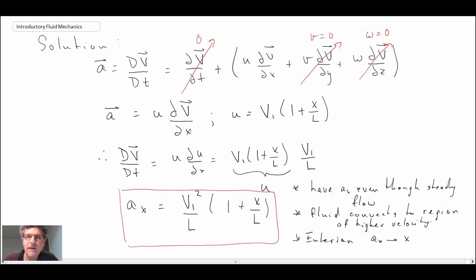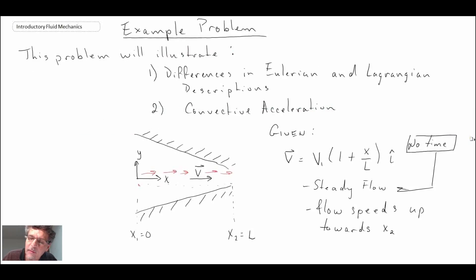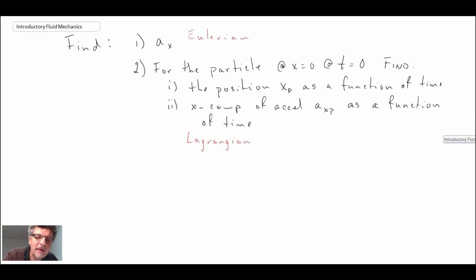So that is the acceleration using the Eulerian approach. What we will do in the next segment is we'll take a look at the same example problem, but we will compute the second part of the problem, which would be the Lagrangian approach. So that's what we will do in the next segment.